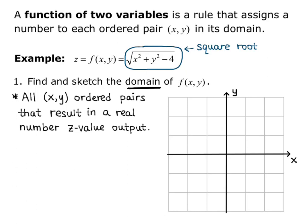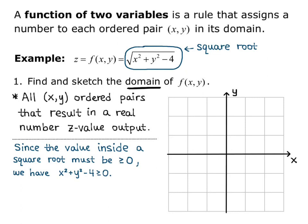Since the value inside a square root must be greater than or equal to 0, we have x squared plus y squared minus 4 is greater than or equal to 0. Get this into a form that we can recognize, and we have that the domain is all x, y in R2, such that x squared plus y squared is greater than or equal to 4.